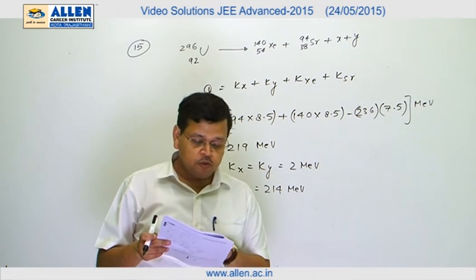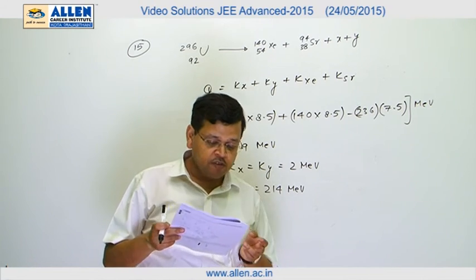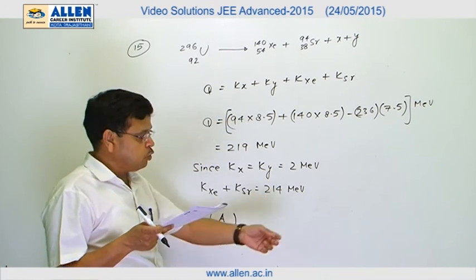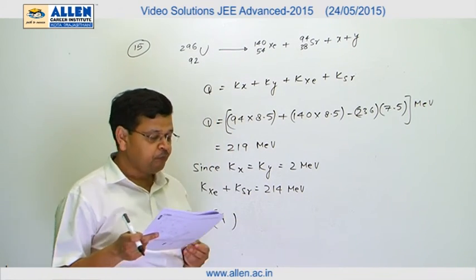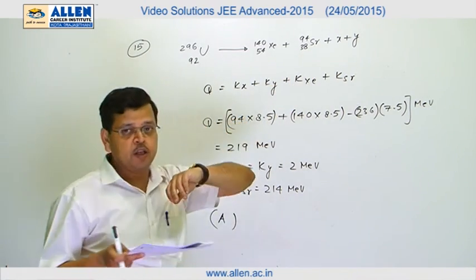Now we have to see in the options that of all the options, the sum of this energy is equal to 214 MeV. But we know that strontium, being the lighter particle, will carry more energy.